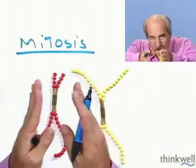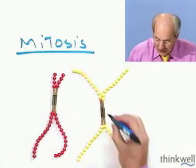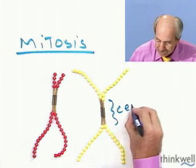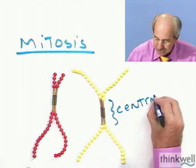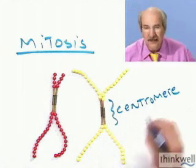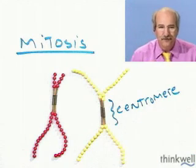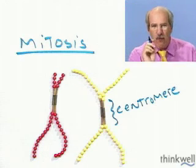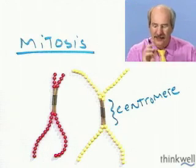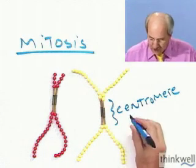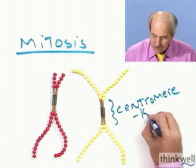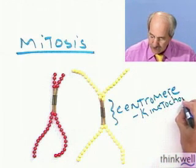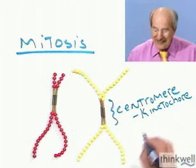In the center of the chromosome there's this kind of pinched-in section, and that's called the centromere. Within the centromere is going to be a very important structure called the kinetochore — the kinetochore within the centromere.